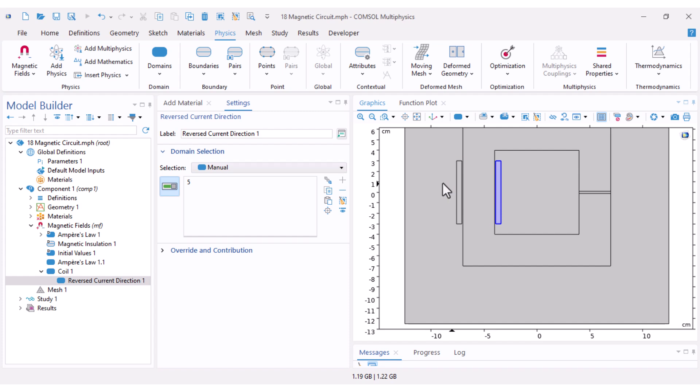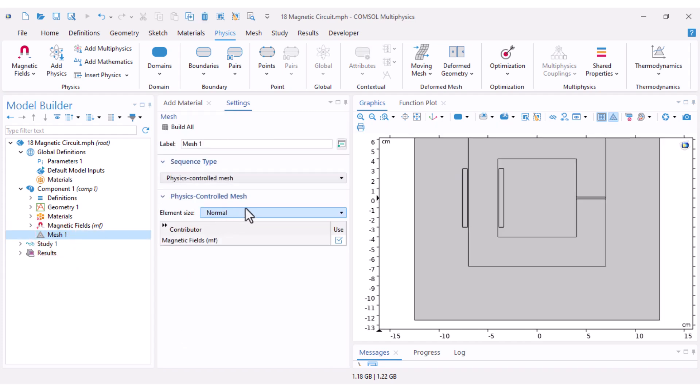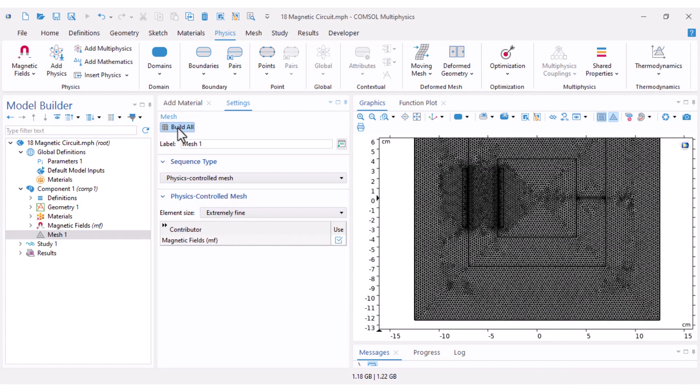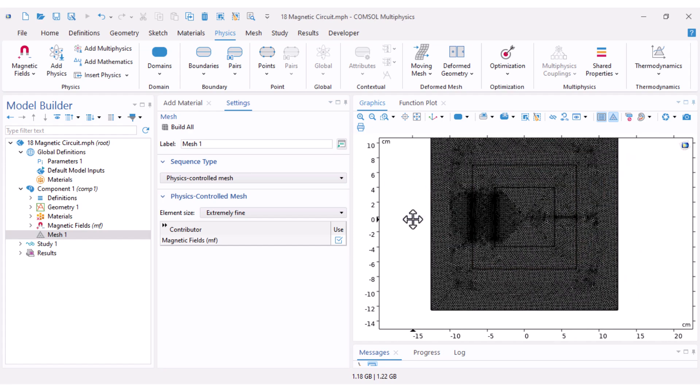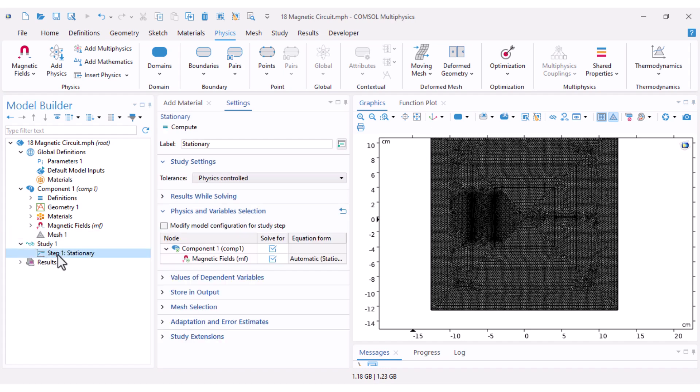Our physics setup is complete. For meshing I'll let COMSOL handle it with the default physics-controlled mesh, but I change my element size to extremely fine to get more accurate results. Everything is ready. Because our current is DC, stationary study is all we need. Click compute and run your simulation.